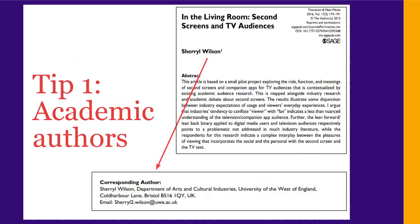First, scholarly sources have academic authors. The author or authors will always have their names listed. These authors are nearly always professional researchers who work at a university or research institute. Your source will have information about which university they work at and how to get in touch with them about their research.